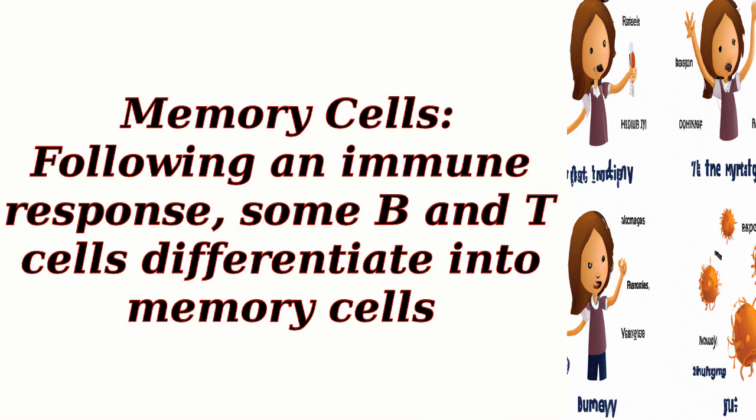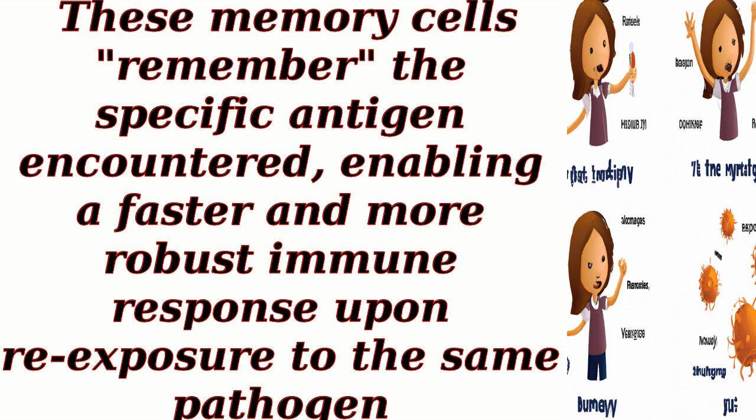Memory cells: following an immune response, some B and T-cells differentiate into memory cells. These memory cells remember the specific antigen encountered, enabling a faster and more robust immune response upon re-exposure to the same pathogen.